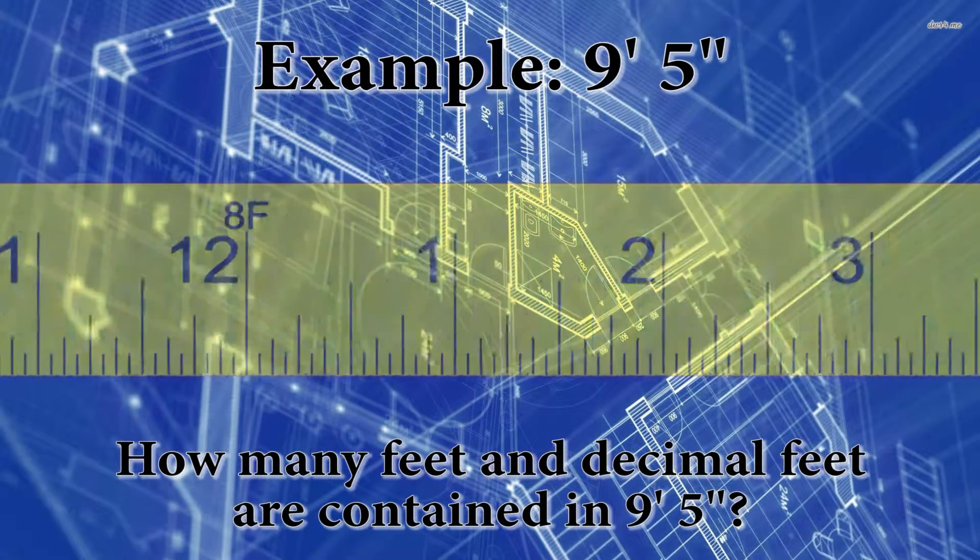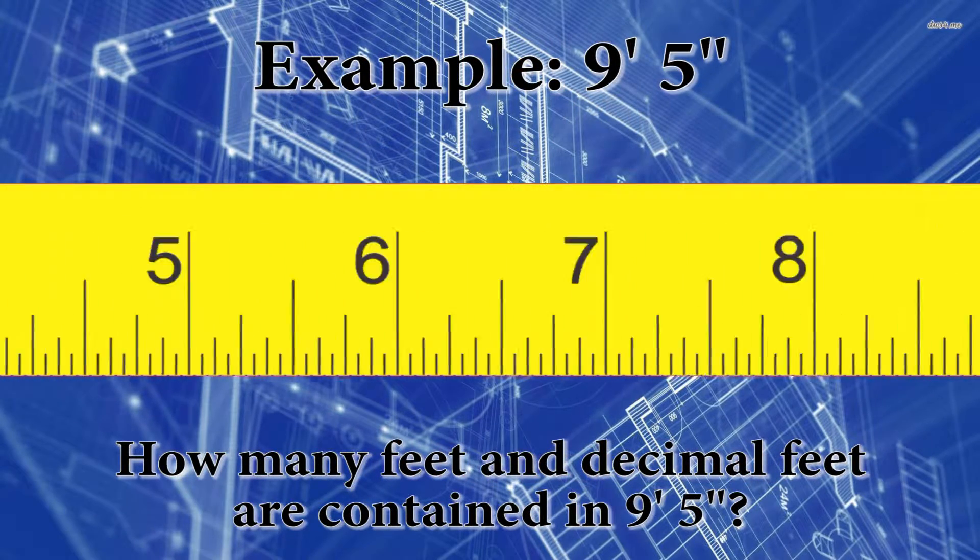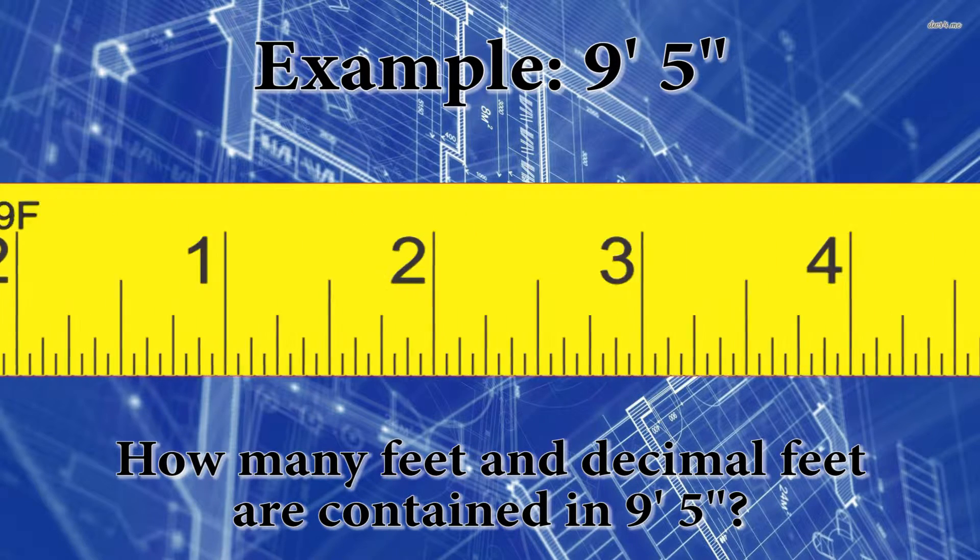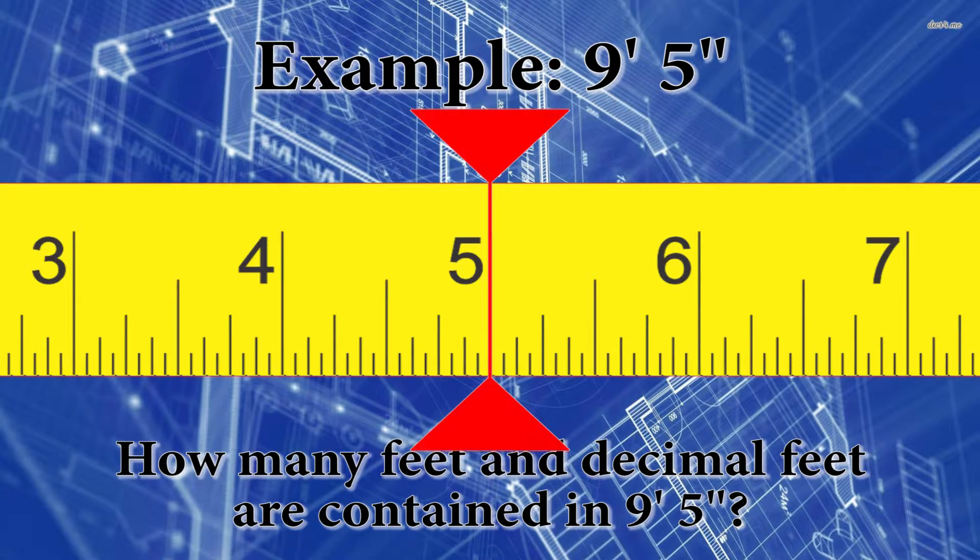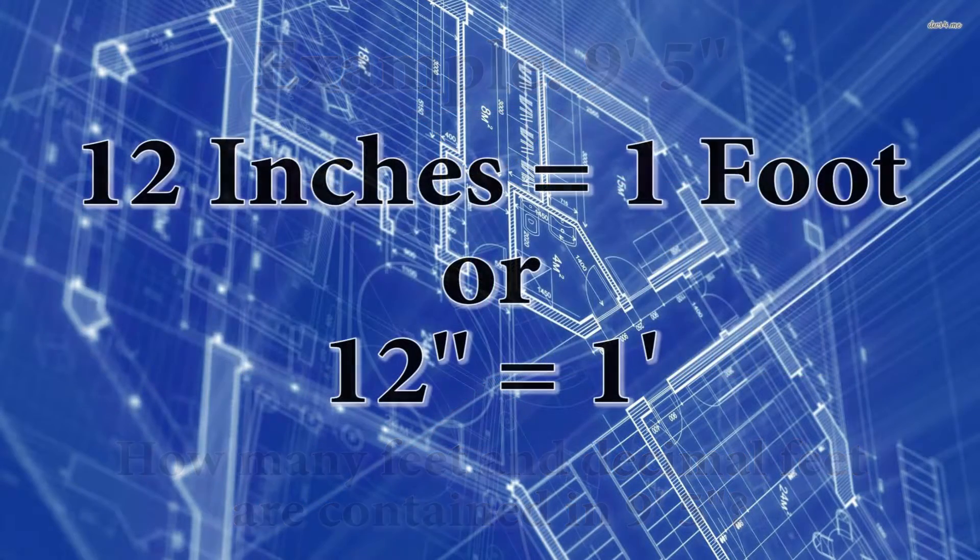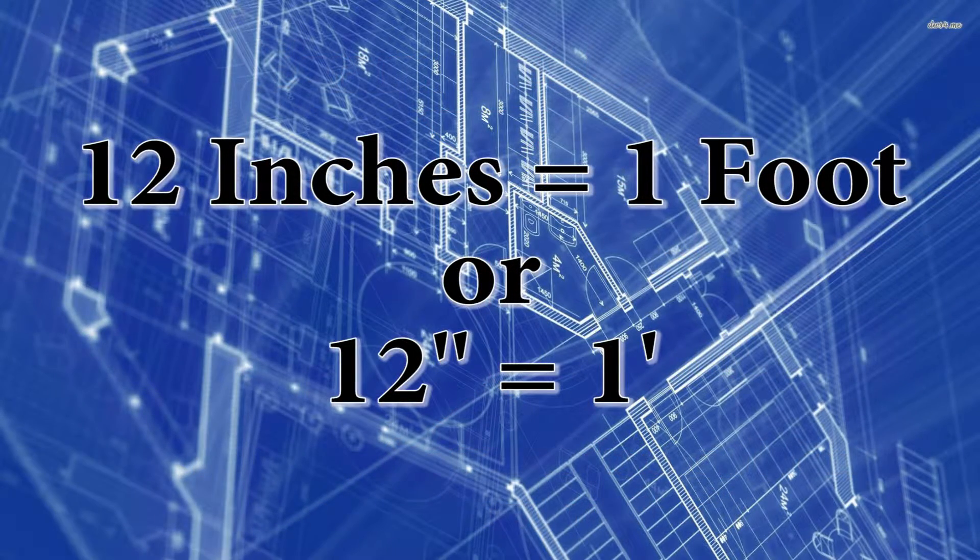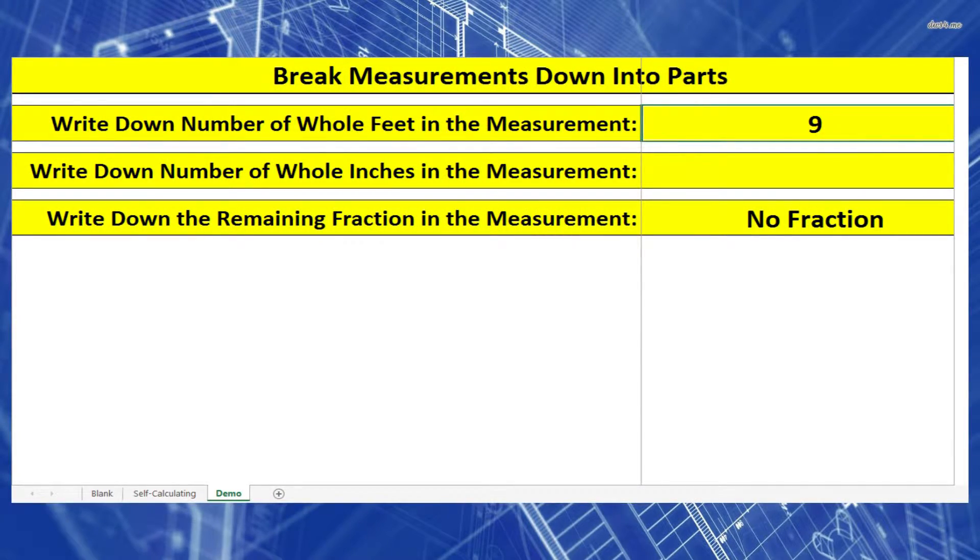So this example will be 9 foot 5 inches. 9 foot 5 inches? That should be easy. Won't that equal 9.5 feet? Well, let's remember that there's 12 inches in each foot, so I actually need to do something a little bit different than what we're thinking here. So let's separate things out on a piece of paper.